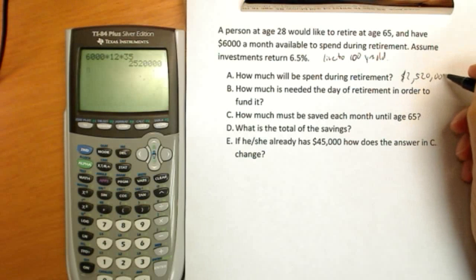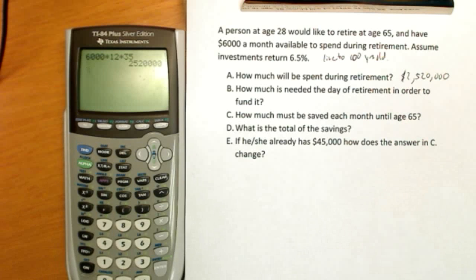So it might seem impossible to save that much money up, $2,520,000. Obviously, not many people save that much. But let's see if you really need to save that much and how this all works out with 6.5% compounding interest.